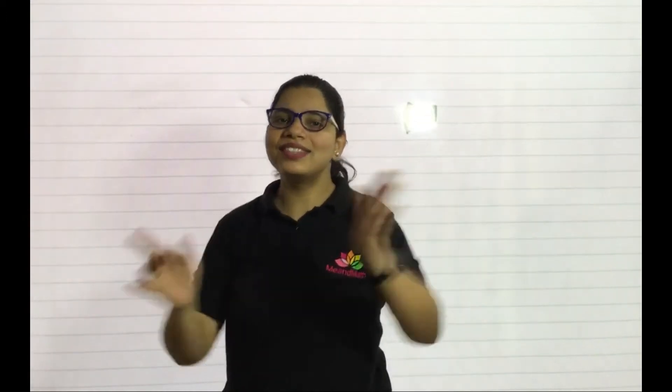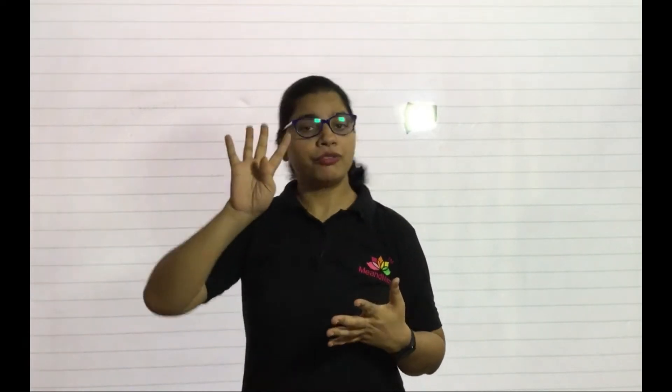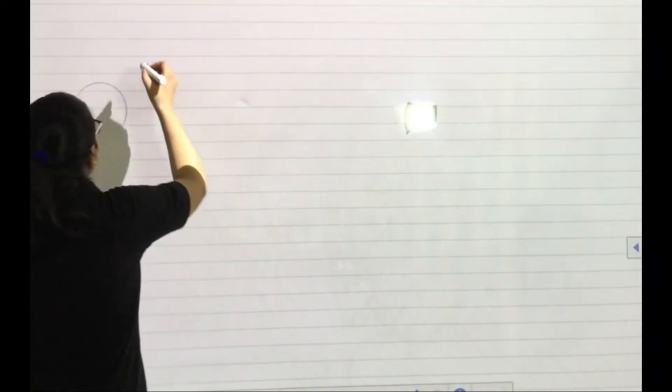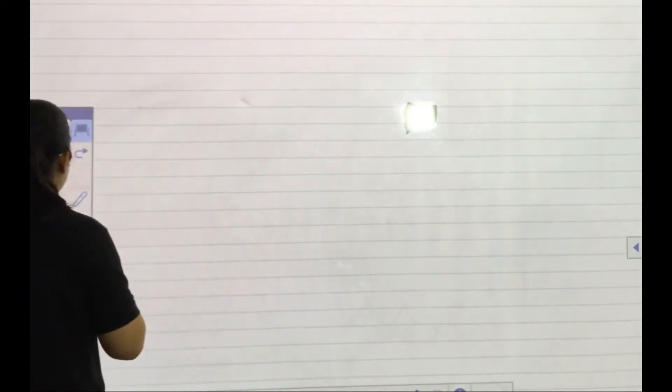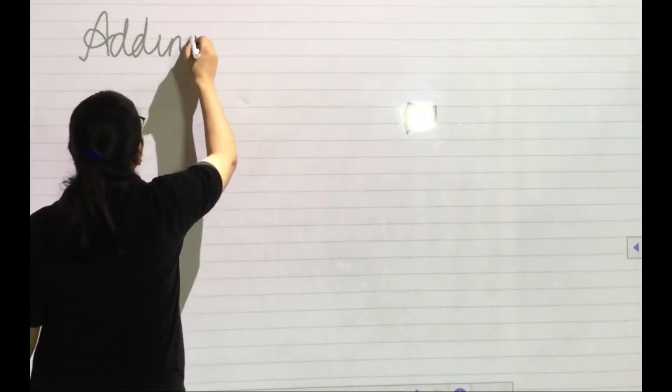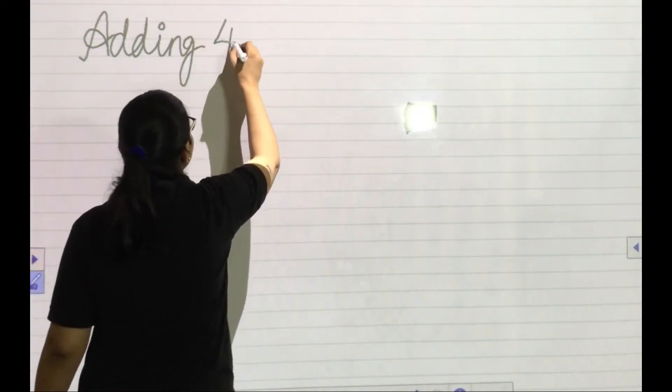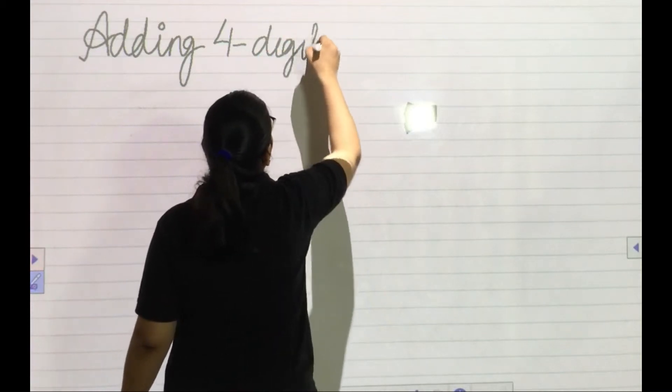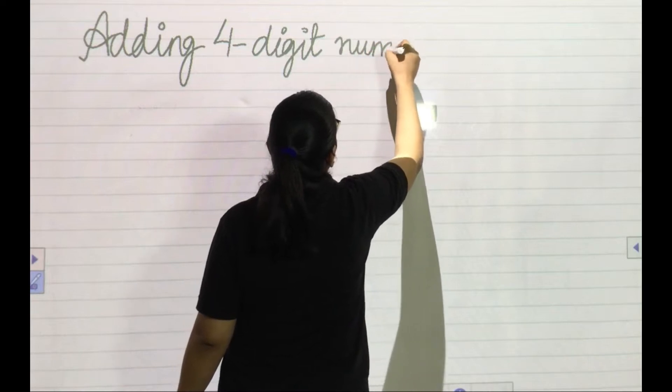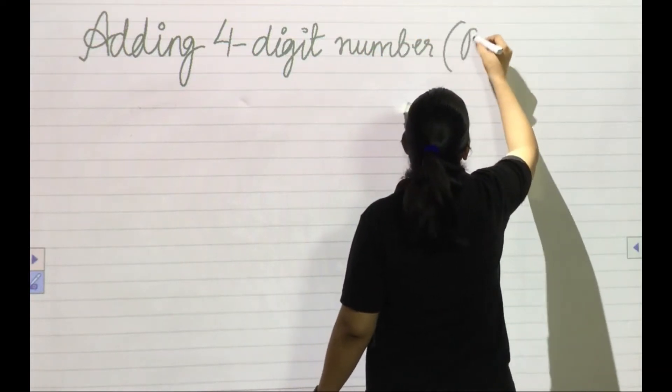Okay kiddos, so today we are going to discuss four-digit number addition — adding four-digit numbers. So we will be learning how to add four-digit numbers, and this is the very first method: the place value model. Adding four-digit numbers using place value model.